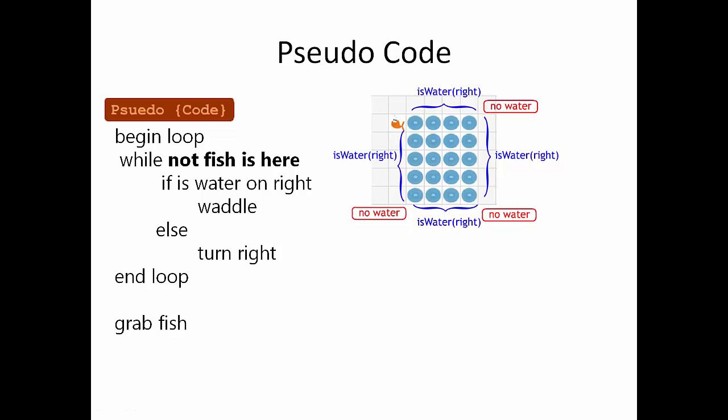Written this way, as long as the loop is running, it'll first check if water's on the right, and if that's true, Pam will waddle. If it's not true, it'll go to the else part of the if statement, and Pam will turn right.